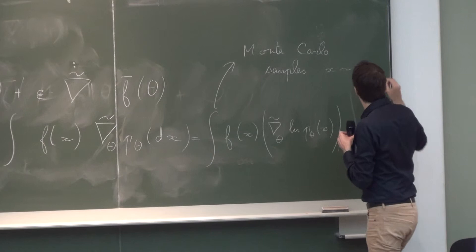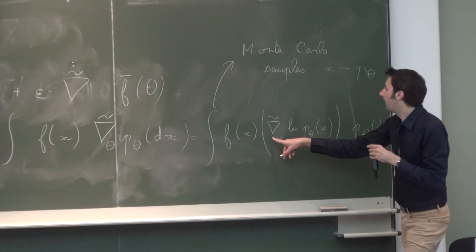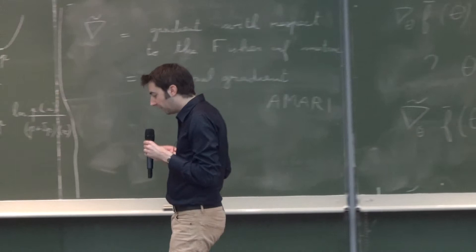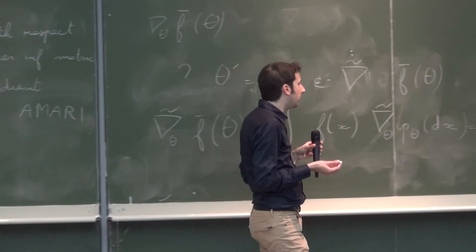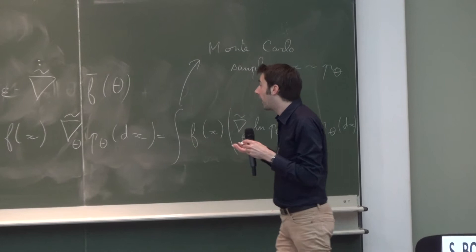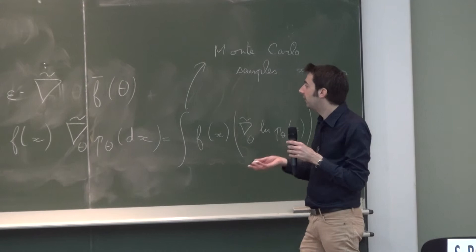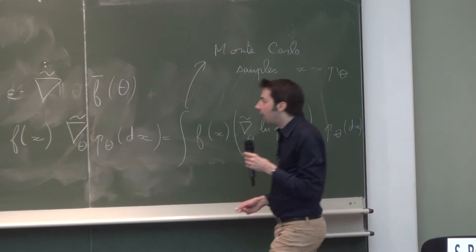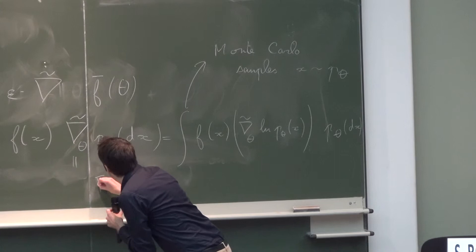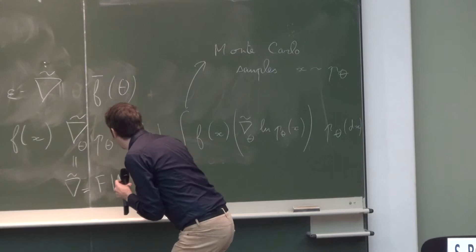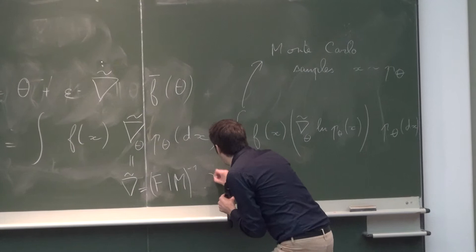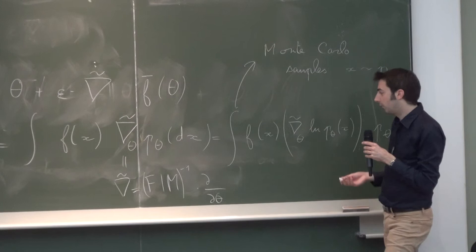To compute the gradient, you also need to compute the Fisher information matrix. You can often do this if you know the shape of your model, because it is the product of derivatives with respect to theta. For Gaussian distributions, we can do it explicitly — we know the exact value of the Fisher information matrix. In any basis, the natural gradient is the inverse of the Fisher information matrix times the coordinate-wise derivative with respect to theta.